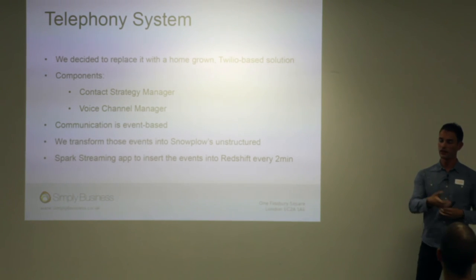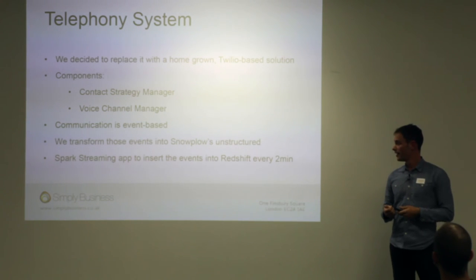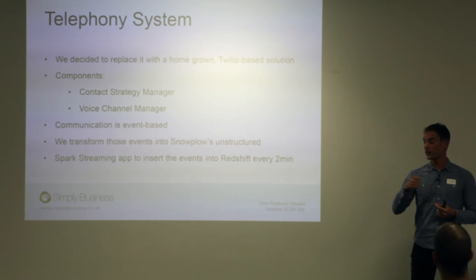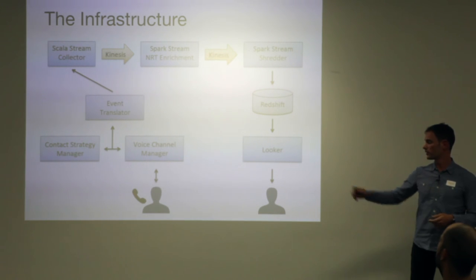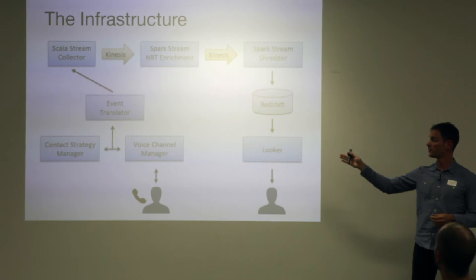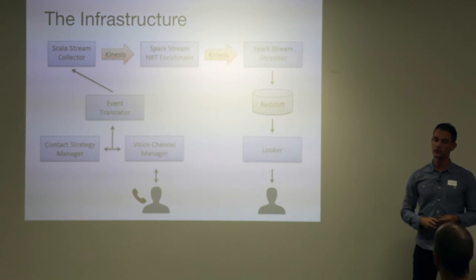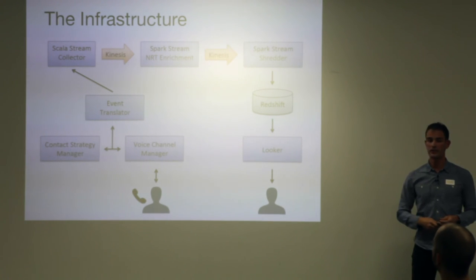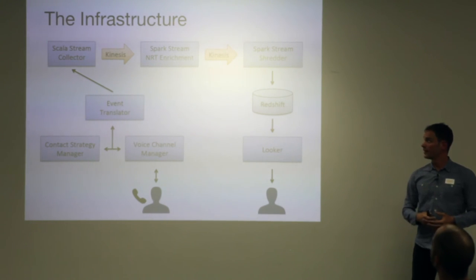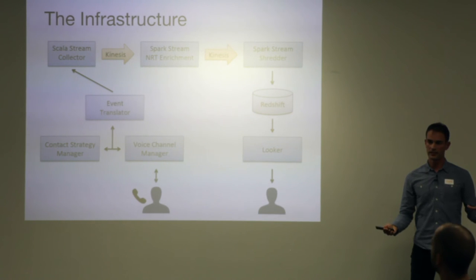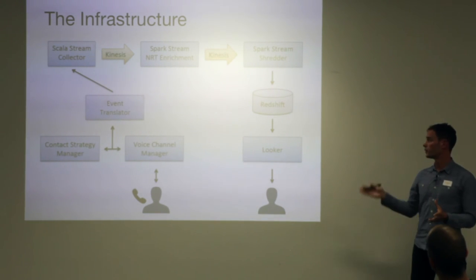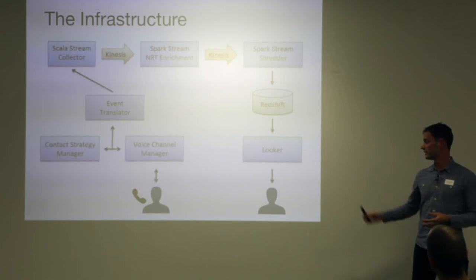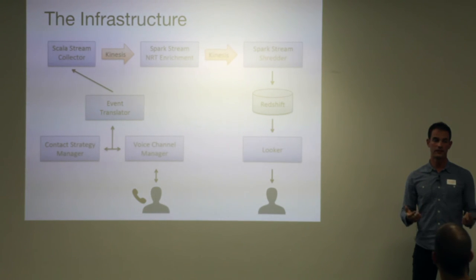What we do is have another consumer that gets these events and translates them to Snowplow events. And because we have the whole real-time NRT pipeline, we can display this data to the team managers and the whole contact center in two minutes. The Spark Streaming enrichment enriches these events in two and a half seconds on average, and then enriched events get written back to Kinesis. We have a Kinesis enriched stream, and another Spark job that runs every two minutes to batch all these events and put them into Redshift.